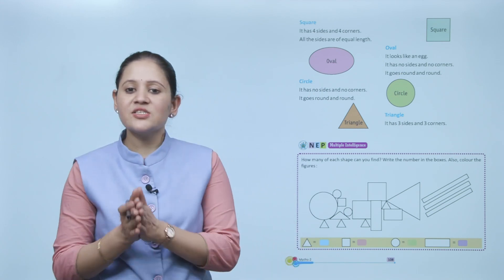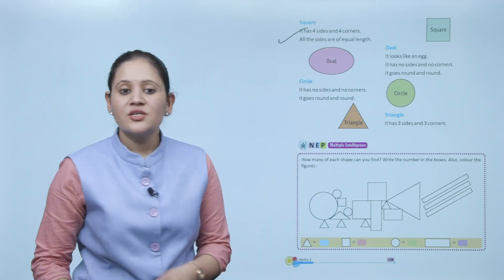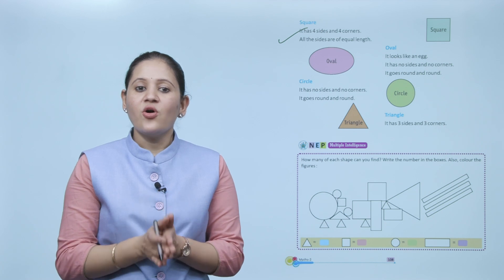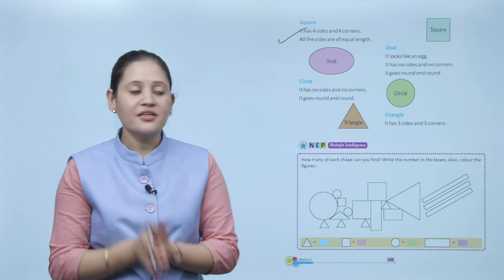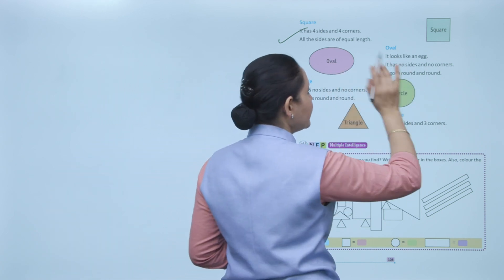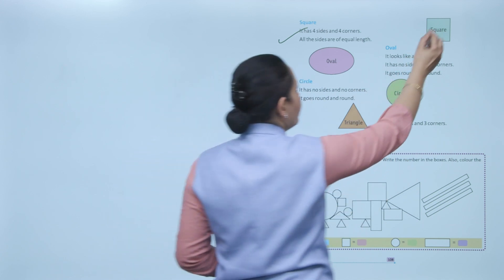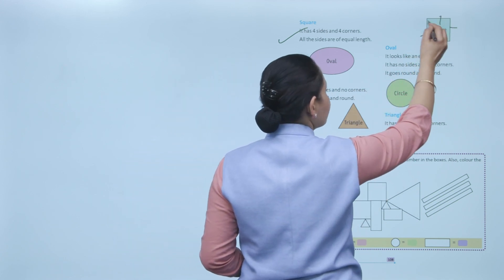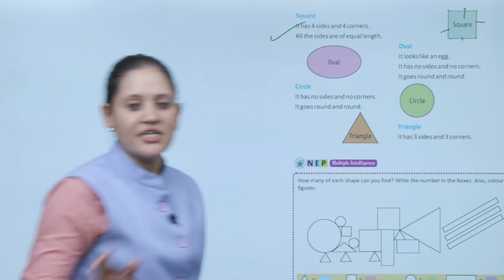Next is square. A square also has four sides and four corners, but all the sides are equal. Like rectangle it has four sides — one, two, three, four — and four corners, but in square all four sides are equal.